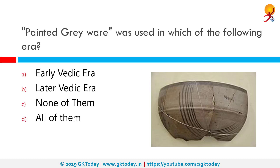Painted Grayware was used in which of the following era? Correct answer is the later Vedic era. The Painted Grayware culture is an Iron Age Indian culture of the western Gangetic plain and the Ghaggar-Hakra valley on the Indian subcontinent, which lasted roughly between 1200 BCE to 600 BCE. It is a successor of the black and redware culture within this region and contemporary with the continuation of the black and redware culture in the eastern Gangetic plain and central India.